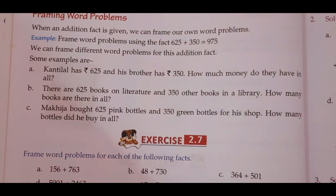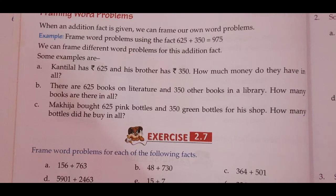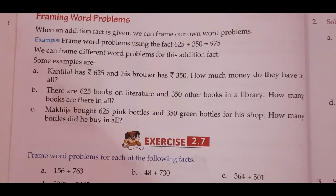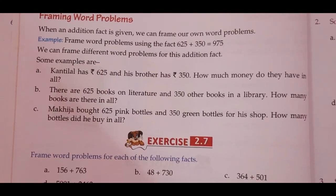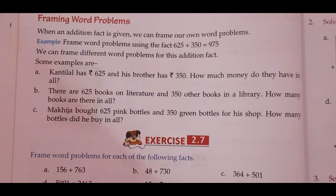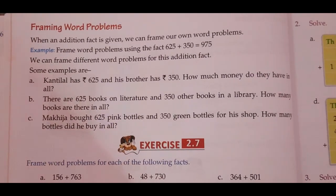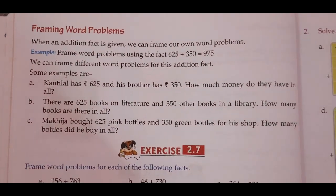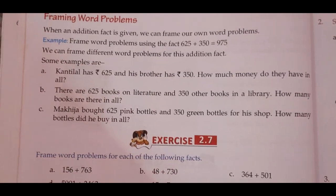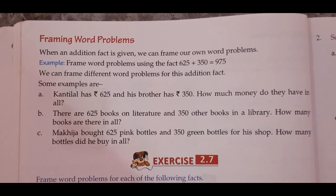The third example is more specific — it deals with objects of different colors. Sheetal bought 625 pink bottles and 350 green bottles for her shop. How many bottles did she buy in all? I hope you have understood these three kinds of examples.